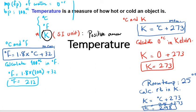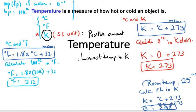Whenever we work with Kelvin — the SI unit — we always have a positive amount of temperature. We don't have negative temperatures in Kelvin. The lowest temperature in Kelvin is zero, and we call that zero Kelvin, or absolute zero.